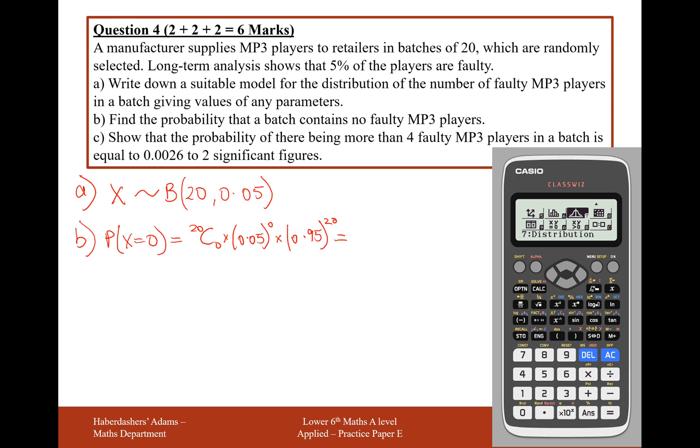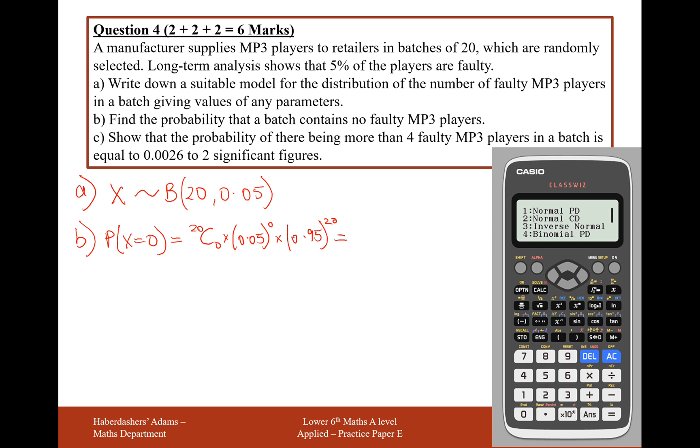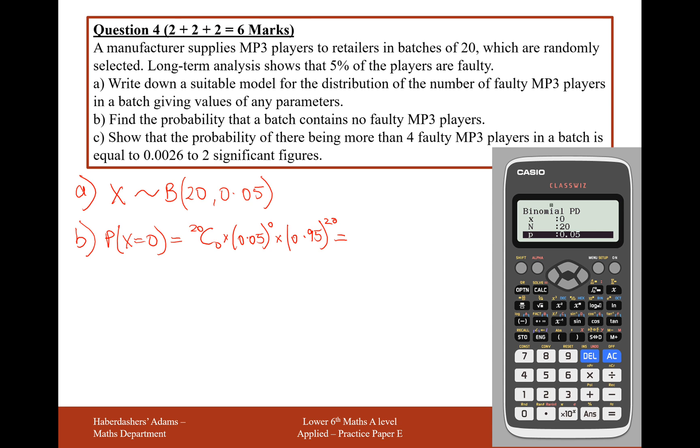Alternatively, you could do this all on your calculator. Go to menu button, option number 7. Hit option number 4 for binomial probability distribution. That's what PED stands for. Click number 2, the variable one.